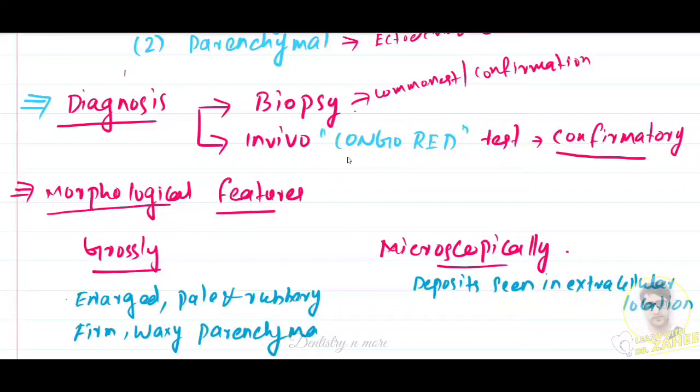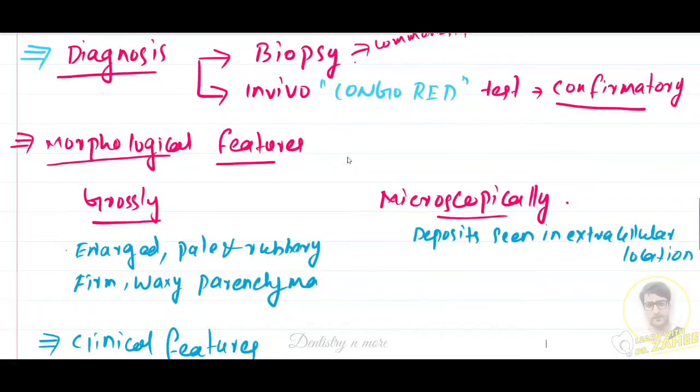Grossly, the affected organ is usually enlarged and pale with rubbery consistency. If the cut surface is taken, it shows firm, waxy, and translucent parenchyma. Positive staining with iodine test will be there - the iodine test will be positive.